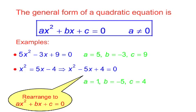And if you have the equation x² equals 5x minus 4, you then have to rearrange it into the form ax² plus bx plus c equals 0. In other words, this becomes x² minus 5x plus 4 equals 0, where a equals 1, b equals minus 5, and c equals 4.